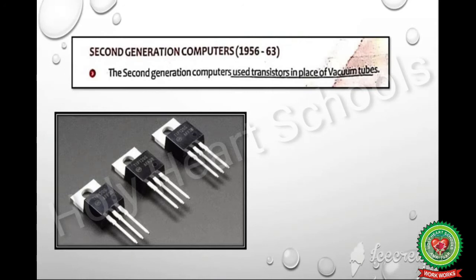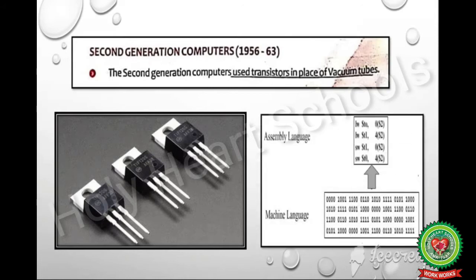Next is second generation computers, 1956 till 1963. These computers used transistors in place of vacuum tubes. Second generation computers moved from machine language to assembly language, which allows programmers to specify instructions in words.